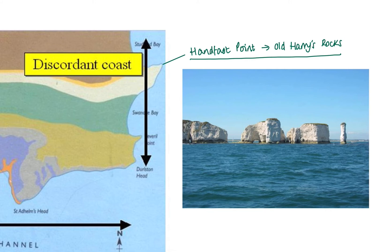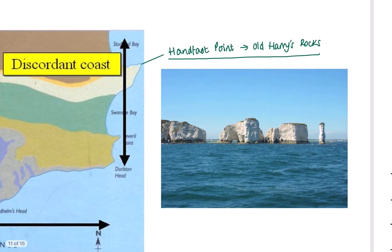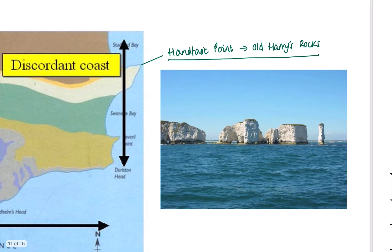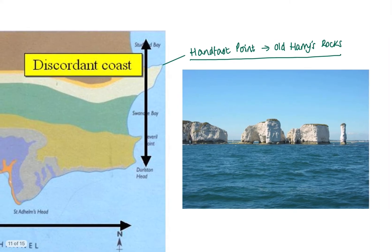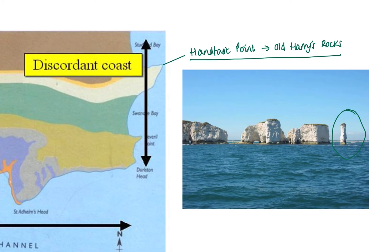Caves open up through the cliff and they form arches. The top of the arch can collapse because of weathering — processes like freeze-thaw, for example, where the water gets into the cracks and expands, causing the rock to shatter, would weather the top of the arch. So when this collapses, it leaves behind a stack, a bit like the one I've drawn a circle around in the picture. The stack that I've drawn a circle around is called Old Harry. Eventually the top of the stack will also be weathered and the bottom will also be attacked through erosion, and at about sea level there's a stump.